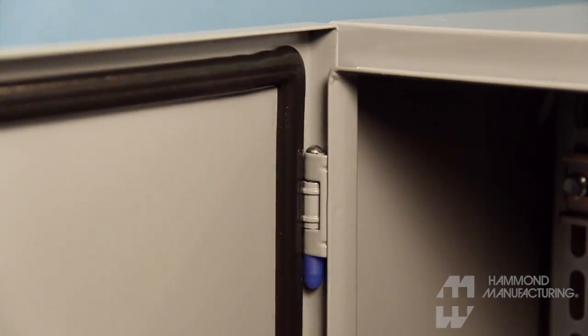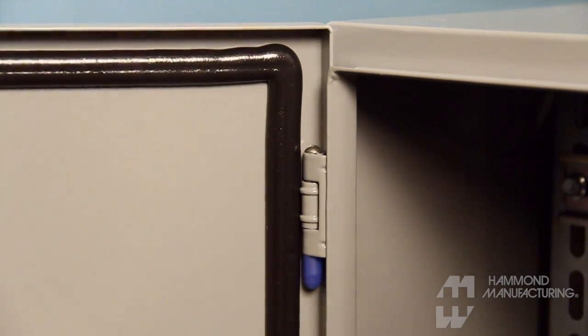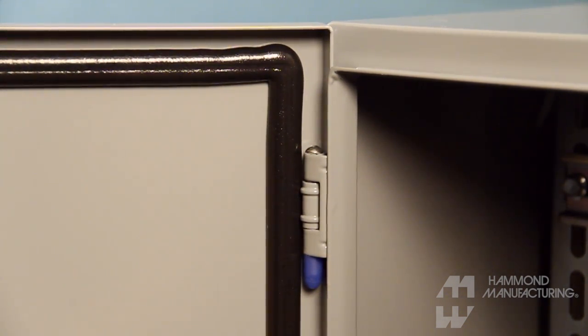Hidden stainless steel hinges feature removable hinge pins, allowing doors to be easily removed for field modification when necessary. A liquid-channeling flange trough collar encircles the door opening.